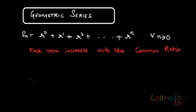Let's look at the convergence of a geometric series — where it converges and when it does not. Any geometric series is one in which each term increases by a common ratio. If r is our common ratio, the simplest form is r to the power 0, plus r to the power 1, plus r squared, and so on up to r to the n, giving us Sn. This holds for all n greater than or equal to 0.